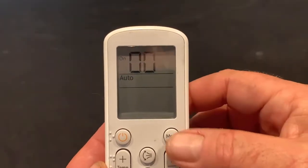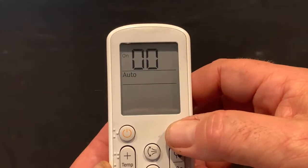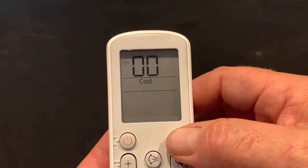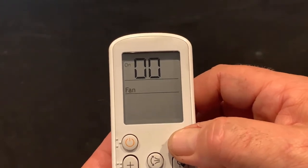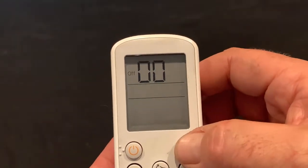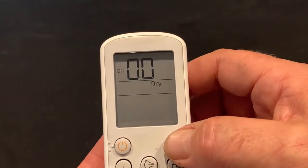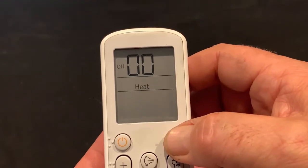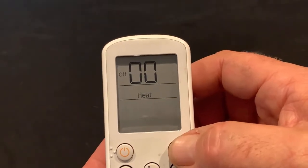To cycle through the segments, we will use the mode button. Every time you press the mode button, you'll notice a change from on to cool, on to dry, on to fan, on to heat, then off to auto, off to cool, off and dry, off and fan, off and heat, and now it'll cycle back to the first two segments.